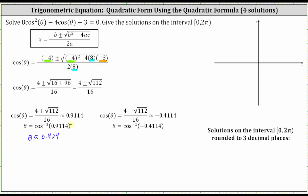Notice the cosine function value is positive. On the coordinate plane, cosine is positive where x is positive, which means we're looking for an angle in the first quadrant as well as the fourth quadrant where the cosine function value is approximately 0.9114. The calculator gave us the angle in the first quadrant of 0.424 radians. The reference angle to this angle is 0.424 radians, which would also be the reference angle for the angle in the fourth quadrant that has the same cosine function value.